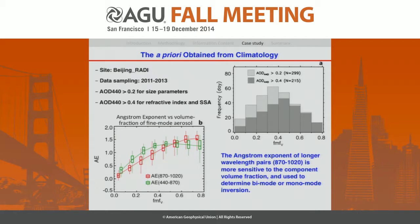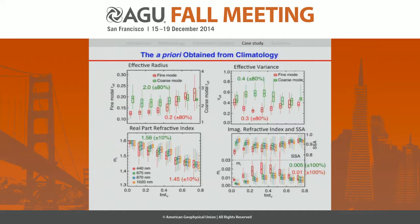This figure shows the Ångström exponent as a function of fine-mode fraction. There is stronger sensitivity of the Ångström exponent at longer wavelengths, between 870 nanometers and 1020 nanometers. We use this Ångström exponent to determine whether to retrieve bimode or monomode aerosols.